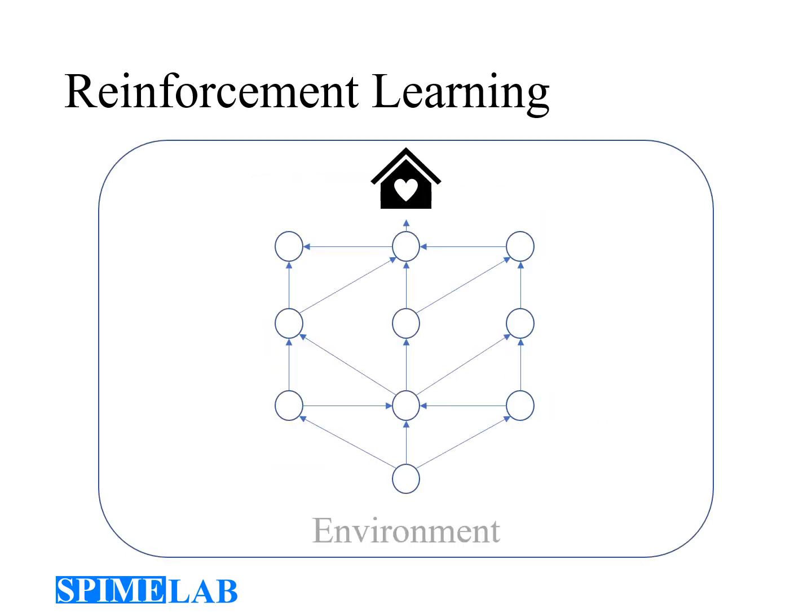Let's try to conceptualize how an environment looks like using this example. It's modeled as a finite set of states or steps. Following these steps leads to a destination or goal. One example problem can be to find the shortest path to reach the destination from any given state. Since there is no data available, the agent will learn the correct path through trial and error.